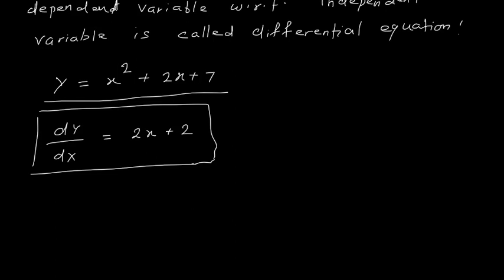If only one independent variable is involved in the differential equation, it is called an ordinary differential equation. In this chapter, we are going to see only ordinary differential equations. So whenever we say differential equation, we mean ordinary differential equation. This example is also an ordinary differential equation as there is only one independent variable.